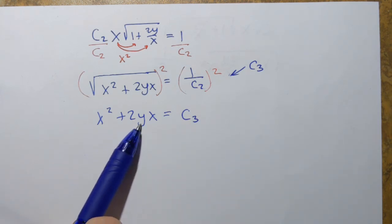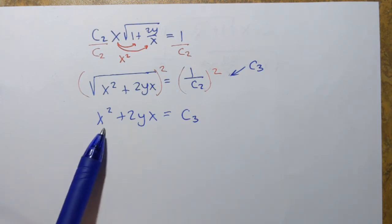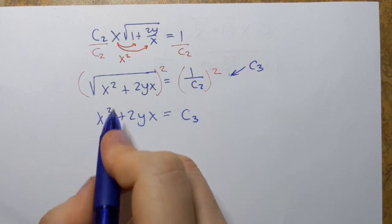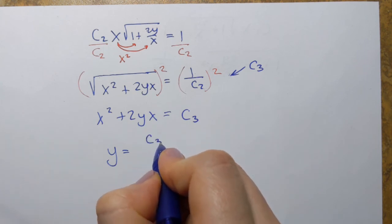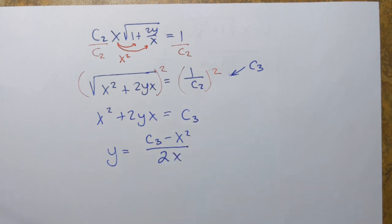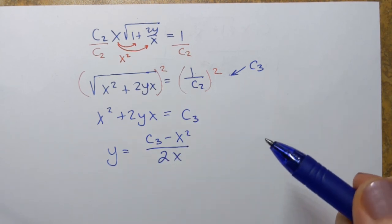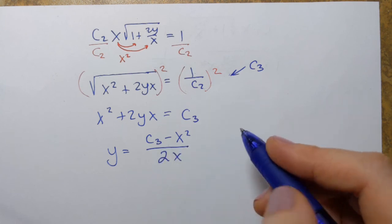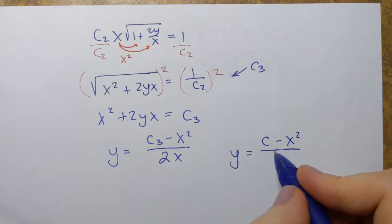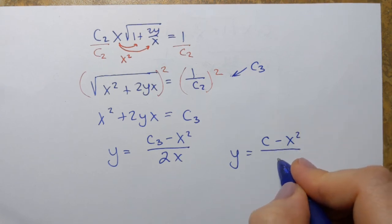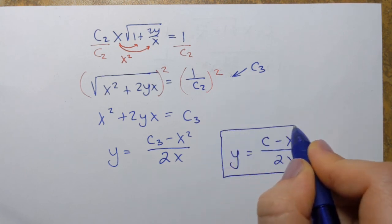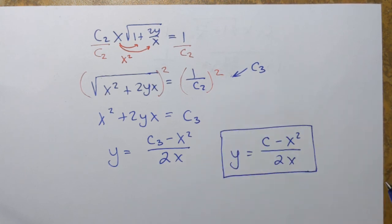We're almost done. To get y by itself, subtract x² from each side and then divide by 2x. So y = (c₃ − x²) / (2x). For the final answer, I'll rename c₃ as just c, since the names of constants don't play any role. So y = (c − x²) / (2x) is the explicit solution to the given differential equation.